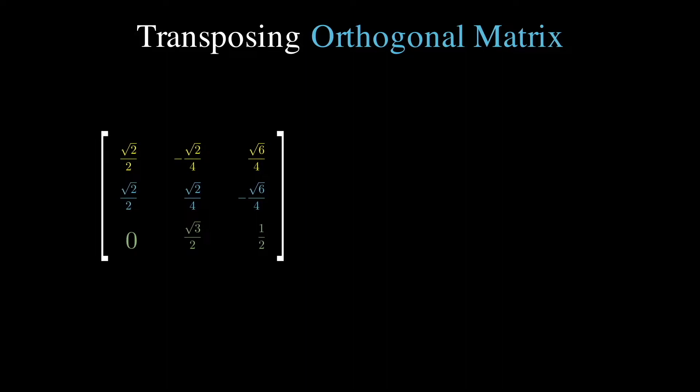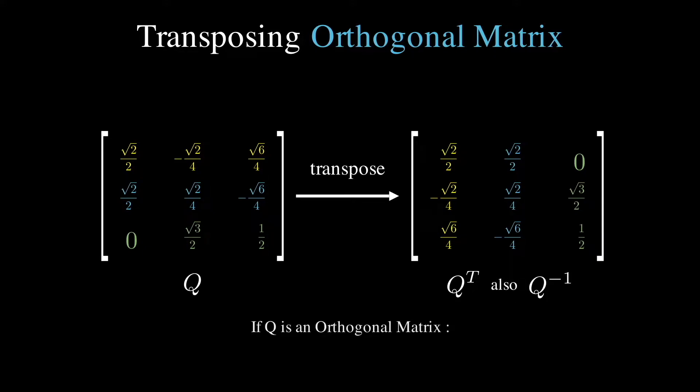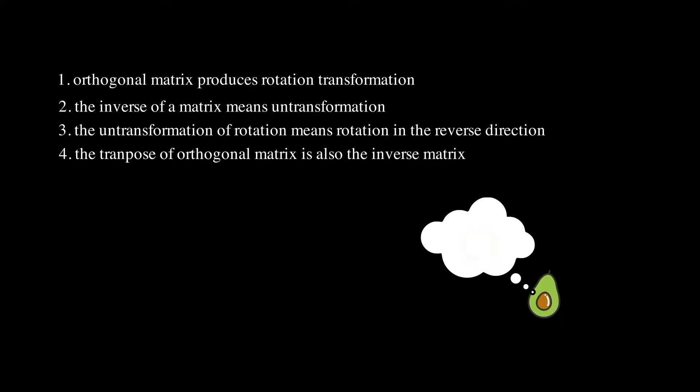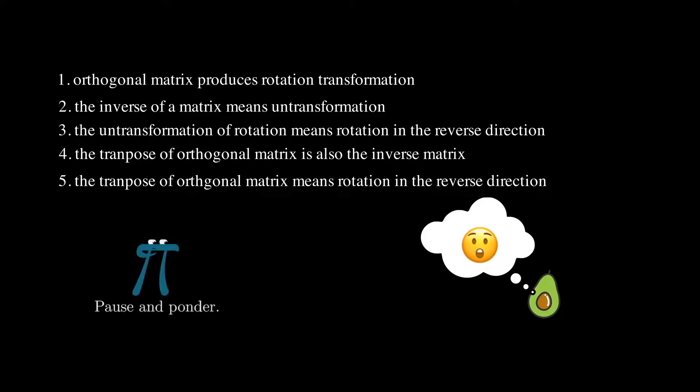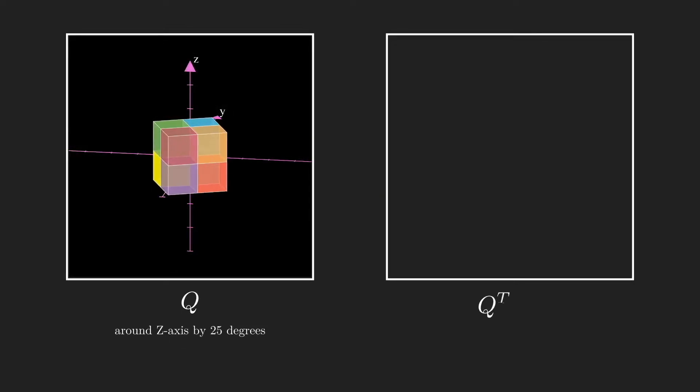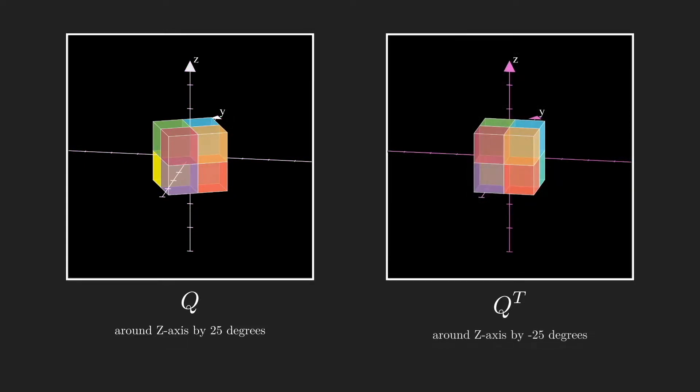But what's not so obvious is that when you transpose an orthogonal matrix, you actually get its inverse. And this is a very interesting property that orthogonal matrix have. Remember, orthogonal matrix produces a rotation. The inverse of matrix means untransformation. The untransformation of rotation means rotation in a reverse direction. The transpose of orthogonal matrix is also the inverse. The transpose of orthogonal matrix is rotation in a reverse direction. For example, if I tell you orthogonal matrix Q rotates around the z-axis by 25 degrees, you can simply transpose that matrix, which would rotate around the z-axis by minus 25 degrees.